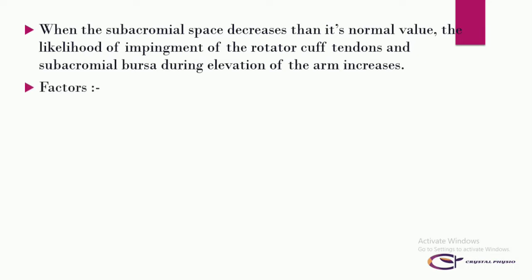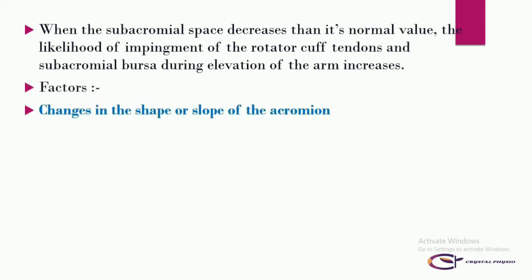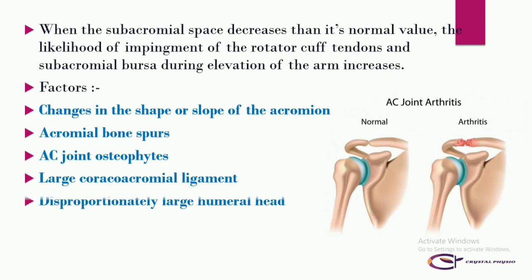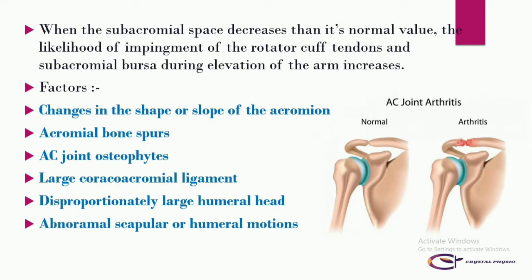There are a variety of factors which decrease the subacromial space. Some of these are changes in the shape or slope of the acromion, acromial bone spurs, acromioclavicular joint osteophytes (meaning AC joint arthritis), a large coracoacromial ligament, a disproportionately large humeral head, and abnormal scapular or humeral motions.